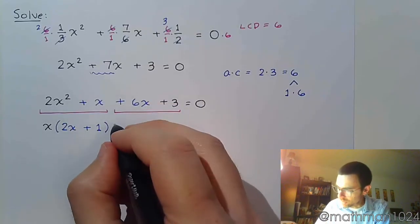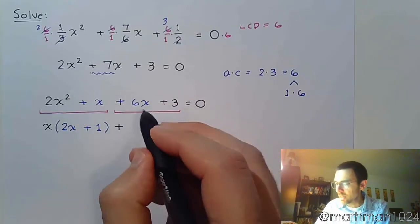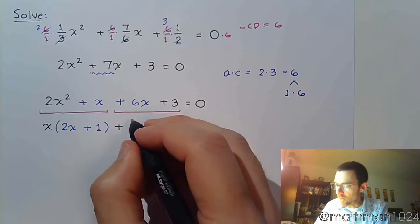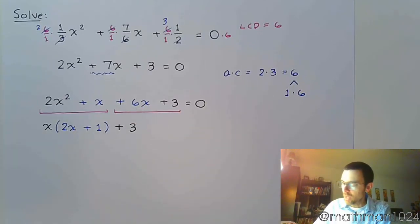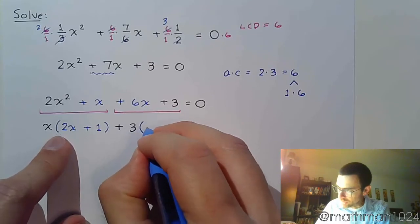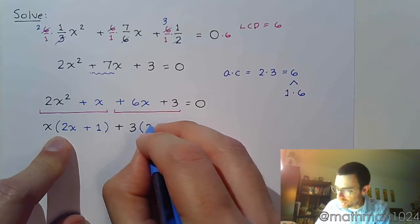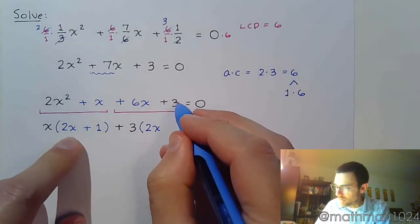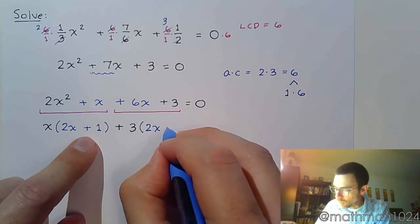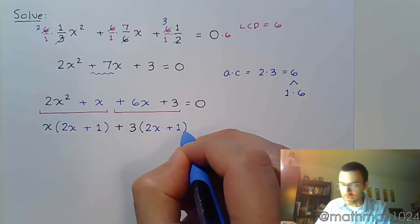All right. In the second group that leads with a positive, the common factor for 6x and 3 is 3. And that's going to allow us to have the exact same thing left over. So 6 divided by 3 is 2, so 2x. 3 divided by 3 gives us 1. So there's that plus 1.